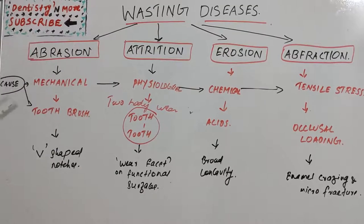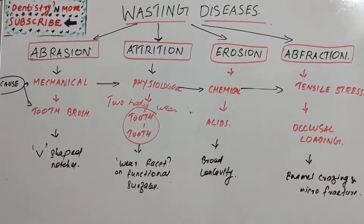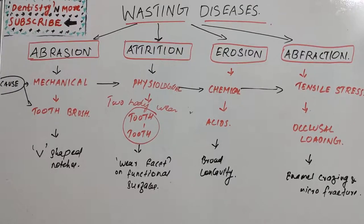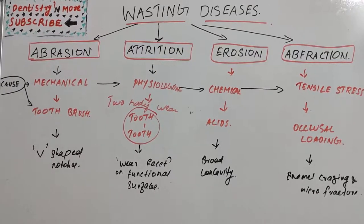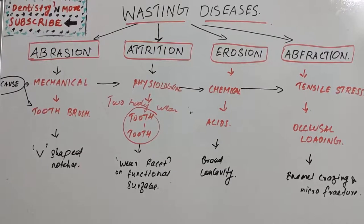Exogenous sources of erosion include lemon juice, aerated drinks like cola, and other citric juices. Endogenous causes — from within the body, such as gastric acids — affect the lingual, incisal, and occlusal surfaces. Exogenous causes can affect any exposed surface of the teeth.